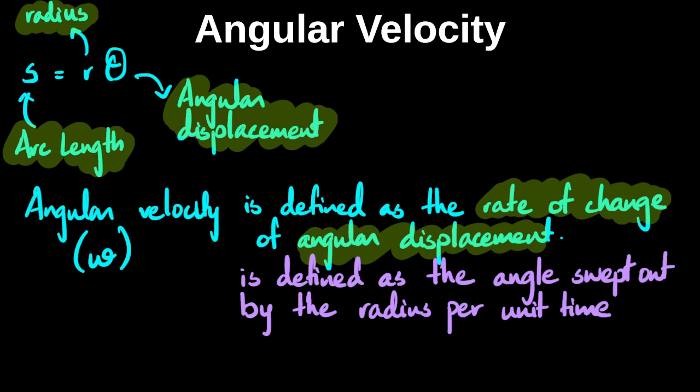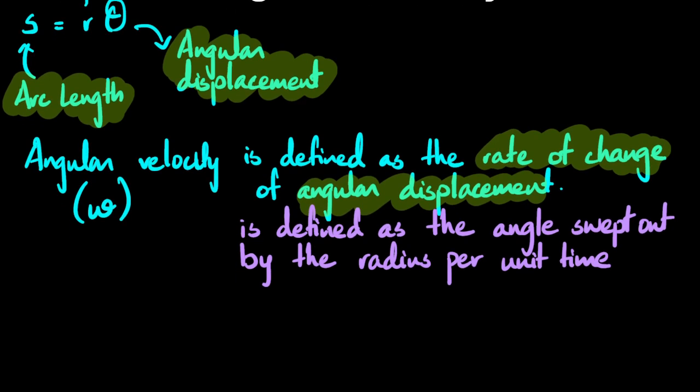The symbol for angular speed or angular velocity is omega, another Greek letter. This can be written as the change in angular displacement divided by the change in time. For someone who is taking math, they might appreciate this can also be written as the time derivative of the angular displacement. But if you don't get this, don't worry, because we are talking about uniform circular motion, so omega will always be constant.